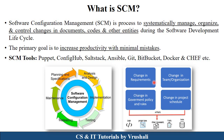Monitoring all these changes is necessary because they affect your programming code, your project planning, your testing data and other databases. To handle all these configuration items, there are different SCM tools available like Puppet, ConfigHub, Solstack, Ansible, Git, Bitbucket, and Docker. These tools are used by the configuration manager to handle all the configuration data. The primary goal of SCM is to increase productivity with minimal mistakes.